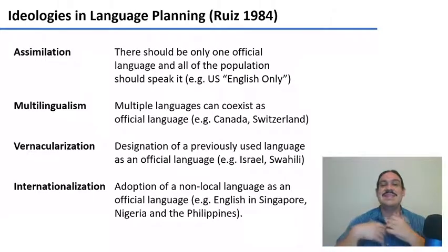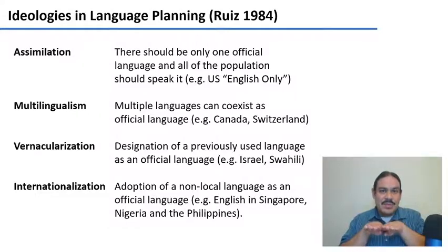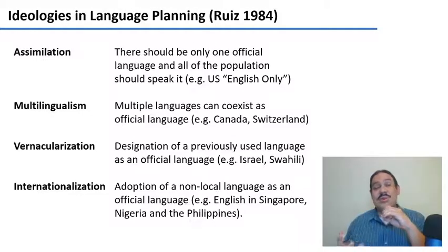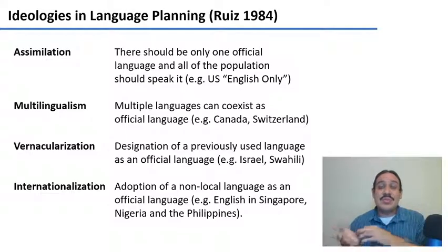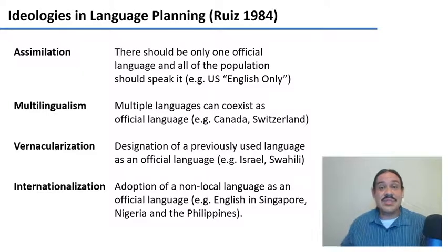Multilingualism as a policy is the idea that societies could exist with multiple languages coexisting in parallel. For example, in Canada, you can access government services in either English or French wherever you are in the country. This would be the same in Switzerland — for whichever of the four languages you speak, the government should be able to provide services, including judges and schooling, in any of those languages.